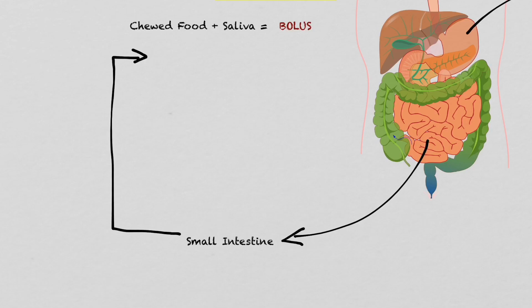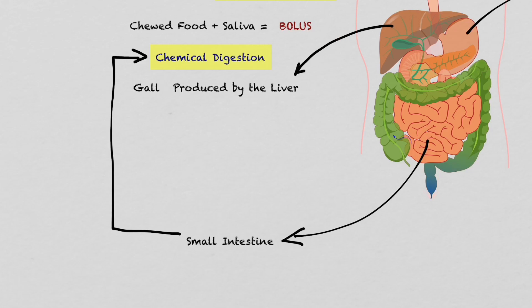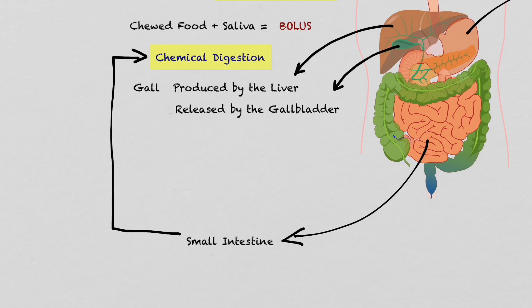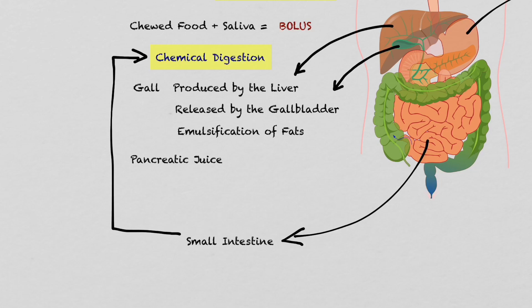The chemical digestion of the food is carried out by two different liquids. The first one is bile, which is produced by the liver but stored and released by the gallbladder. Bile is responsible for emulsifying the fats. The second liquid is pancreatic juice, produced and released by the pancreas, which is responsible for digesting sugars, fats, and proteins.